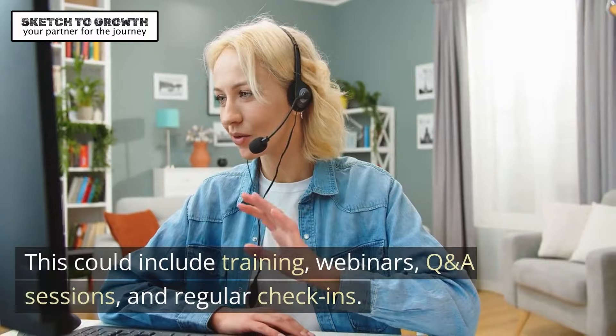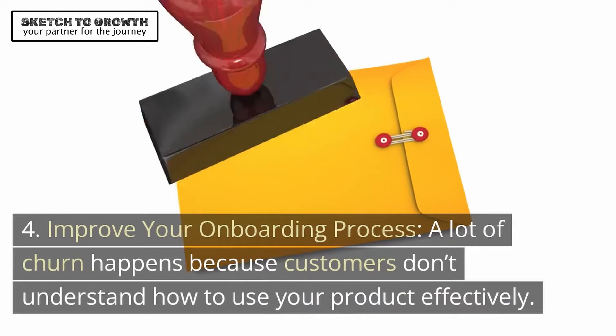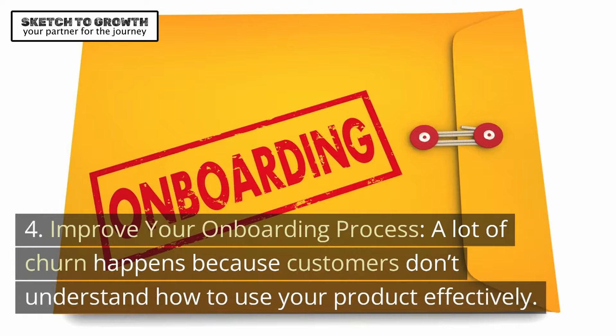Third, utilize predictive analytics: use AI and machine learning algorithms to predict which customers are most likely to churn and proactively address their issues. Fourth, improve your onboarding process. A lot of churn happens because customers don't understand how to use your product effectively. A good onboarding process will make the product easier to understand and more sticky.